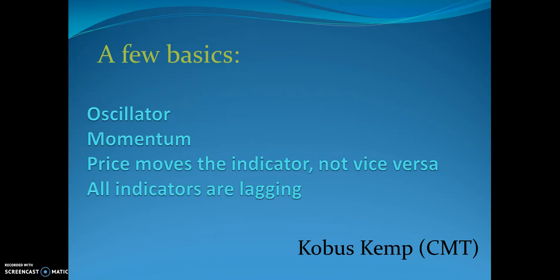Price moves the indicator, not vice versa. I heard the other day that the stochastic will move the market or price in the opposite direction if certain things happen — that is the biggest nonsense I've heard. No indicator can move price. Price moves on its own, and then according to price the indicator will react or move. Very important: all indicators are lagging, which confirms that price will always move the indicator, not vice versa.